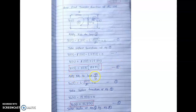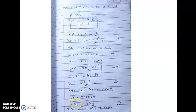Now apply KVL to loop 2. In this loop: V(t) minus L·di(t)/dt equals 0. Taking the Laplace transform of this equation 3, and since this term is a derivative we multiply by S, giving V(S) minus SL·I(S) equals 0. Rearranging, V(S) equals SL·I(S), which is equation number 4.